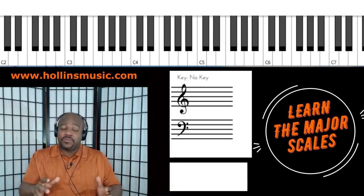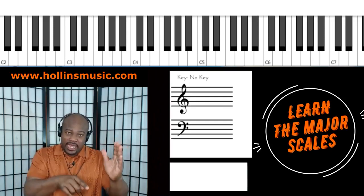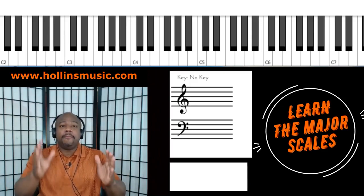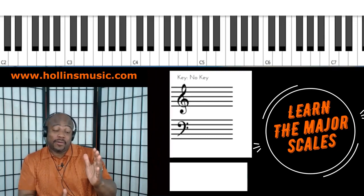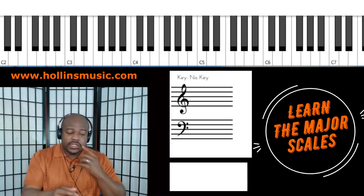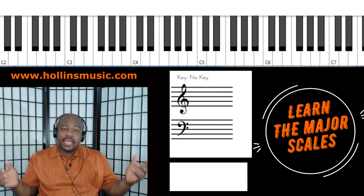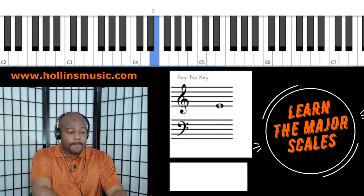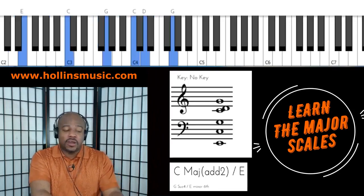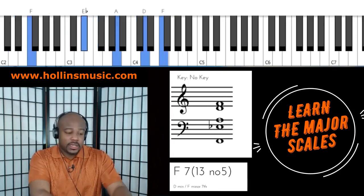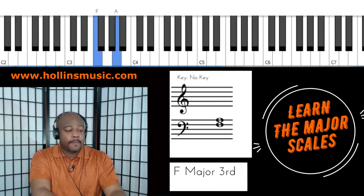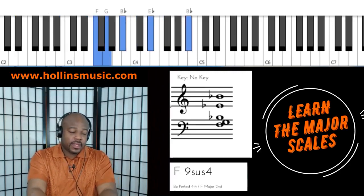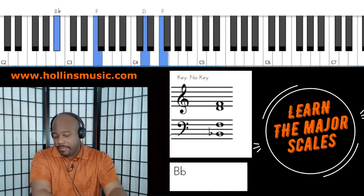There will be chords where you have what I call slash chords or split chords — a particular chord you're playing where the bass note is different. For example, you may have a C major chord on top with a G in the bass. I would call that C major over G, or in numbers: one major over five. We take that same information and apply it to another key. Let's take it to the key of F.